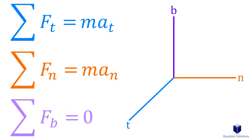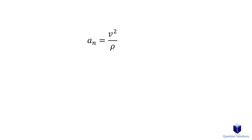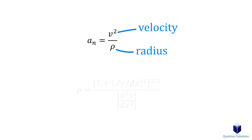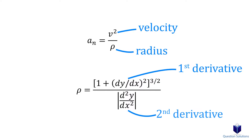For the binormal direction, there is a bit of a difference: the forces added together in the binormal direction is equal to zero. Everything else is pretty much the same. A quick recap — to find normal acceleration, remember that it's velocity squared over the radius. Or if an equation representing the curve is given, we need to use the radius of curvature equation.